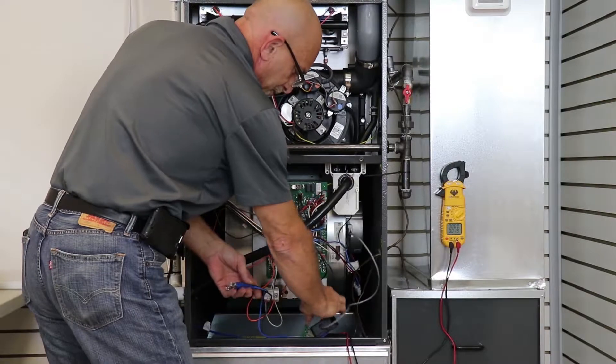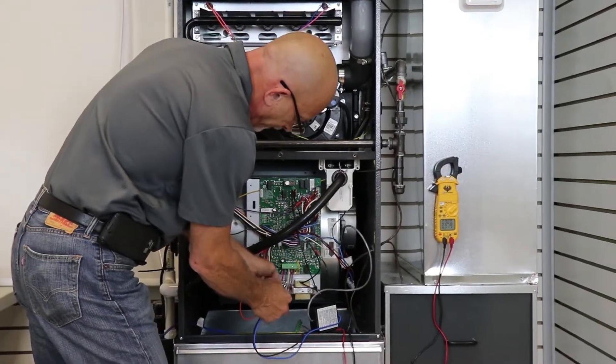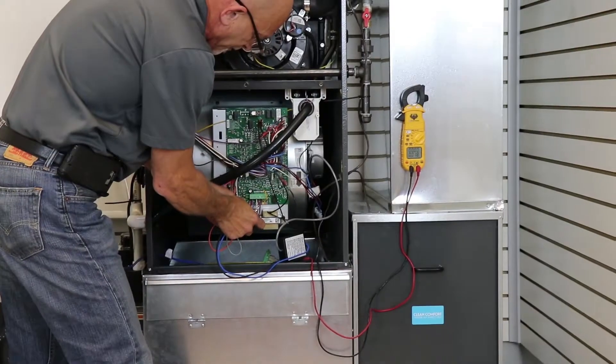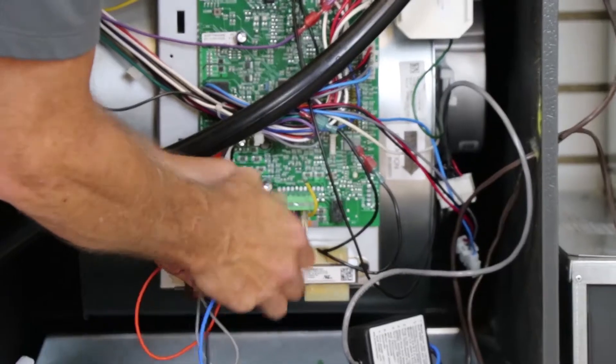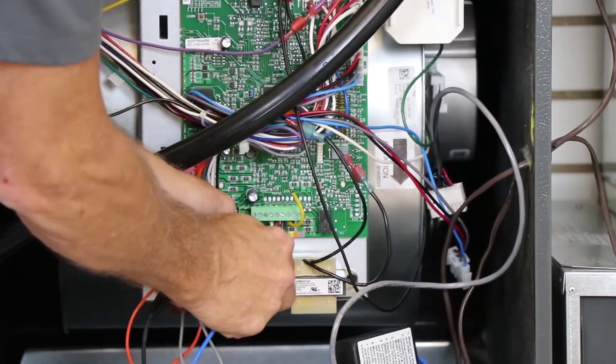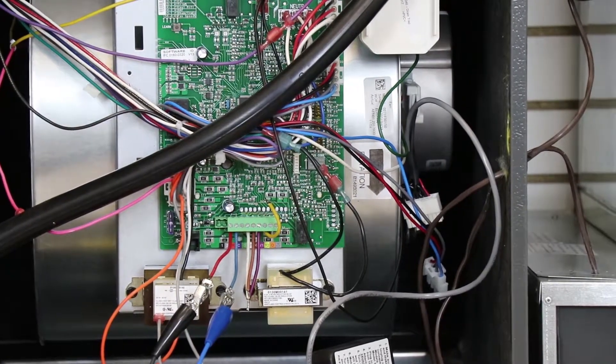Then we have to put this to 24 volts. We can go right to our control board, turn our power back on to the furnace.